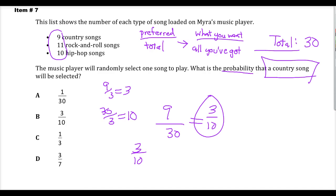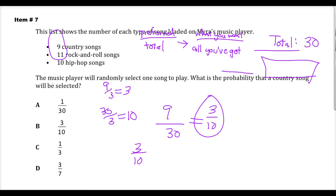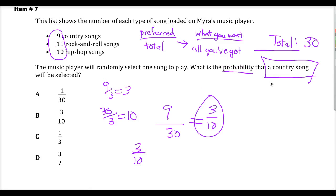But the big deal about this question is if you see probability, the first thing you need to do is find a total. And once you have a total, it's what you want overall you've got. Reduce. Done. And you're out the door. This isn't a difficult question to get correct. So just take your time and do a few things and make it easier on yourself.